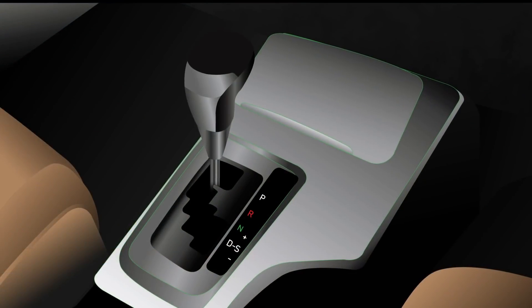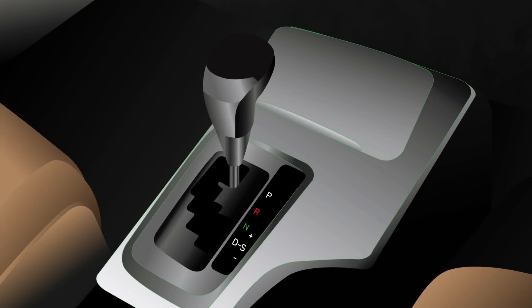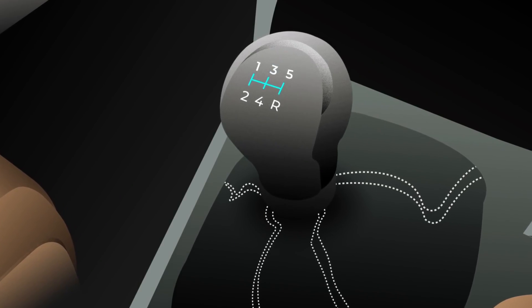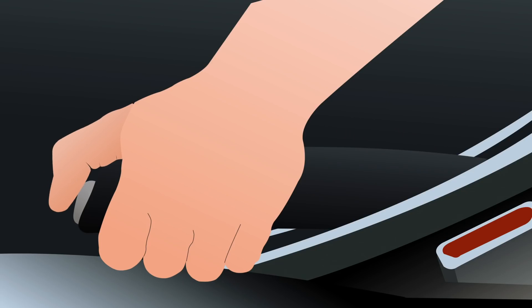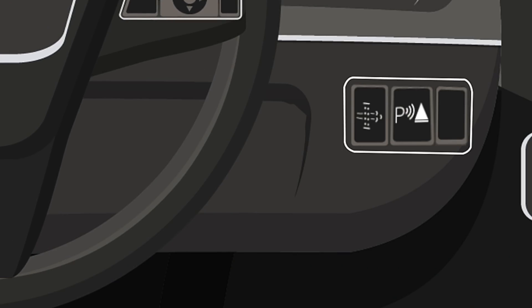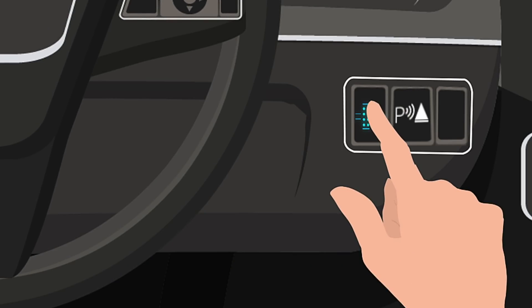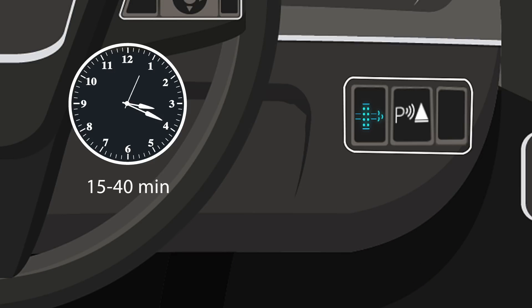Shift the gear lever to P for vehicles with automatic transmission or N for vehicles with manual transmission, and firmly set the parking brake. Press the DPF switch to start the regeneration process. It takes around 15 to 40 minutes to complete the process.